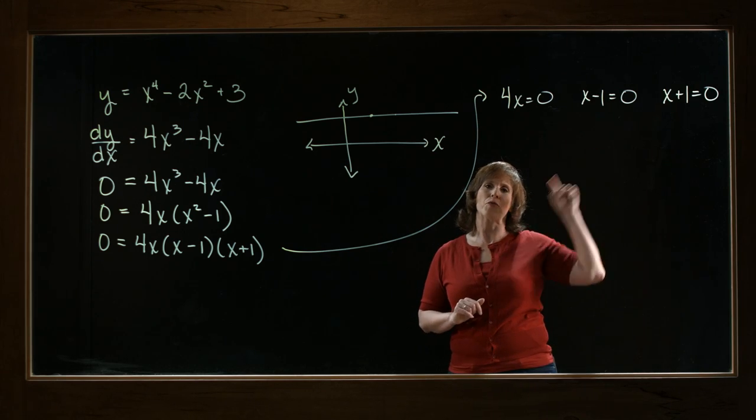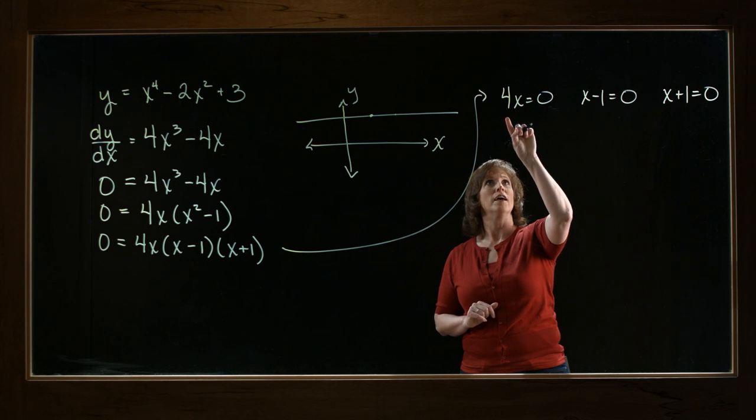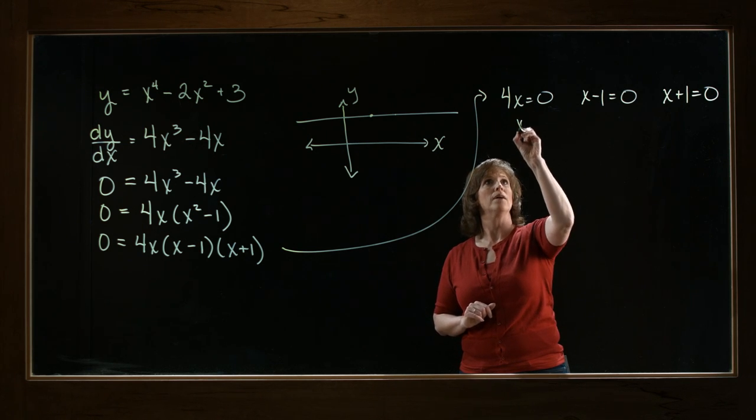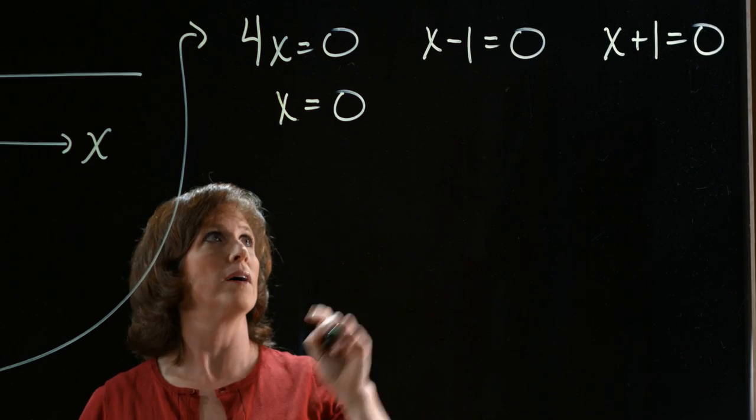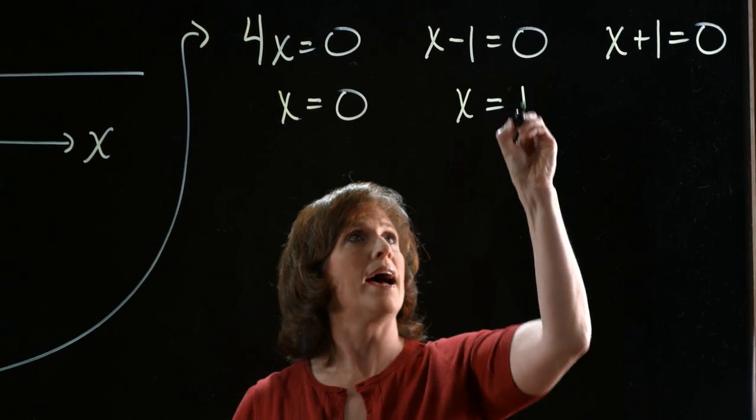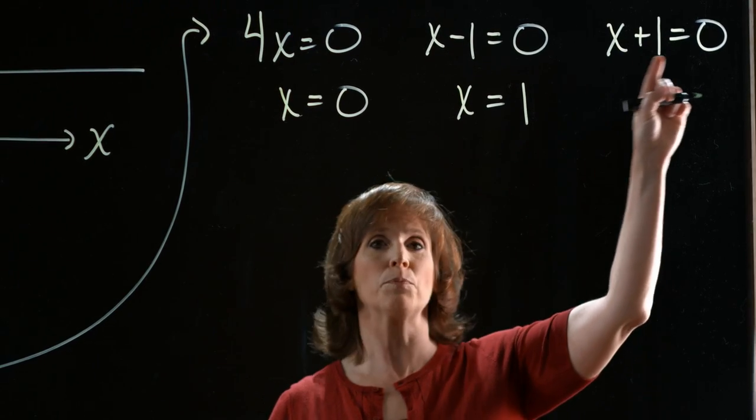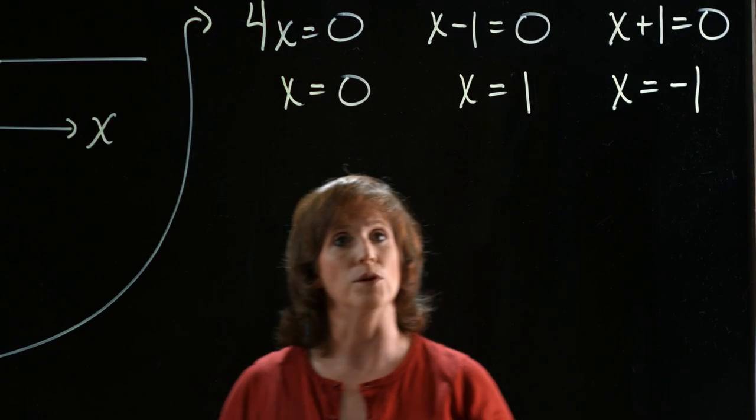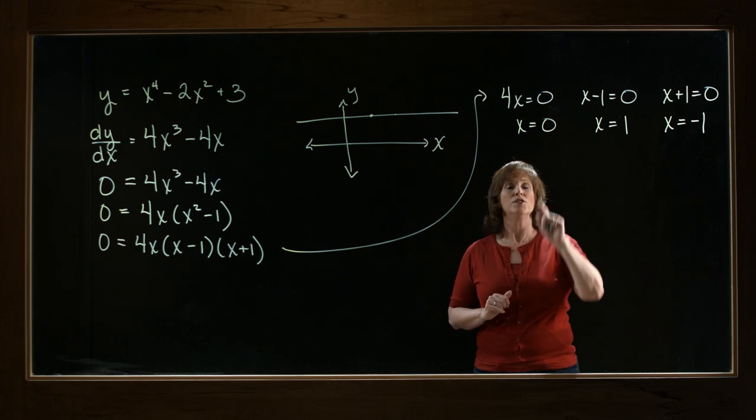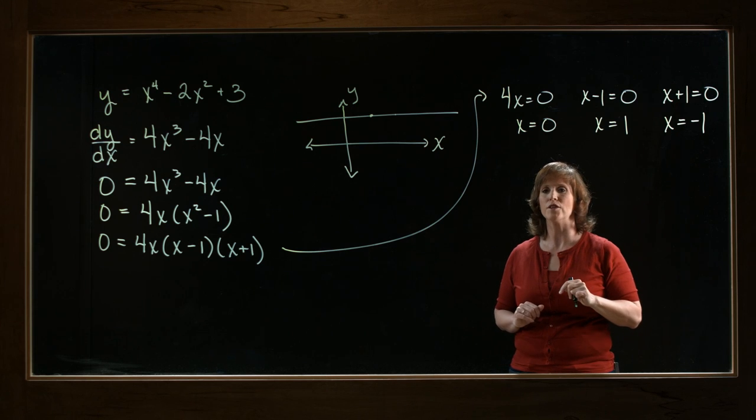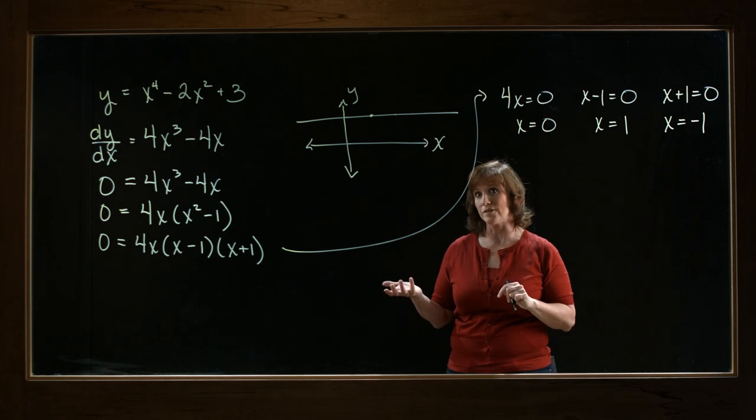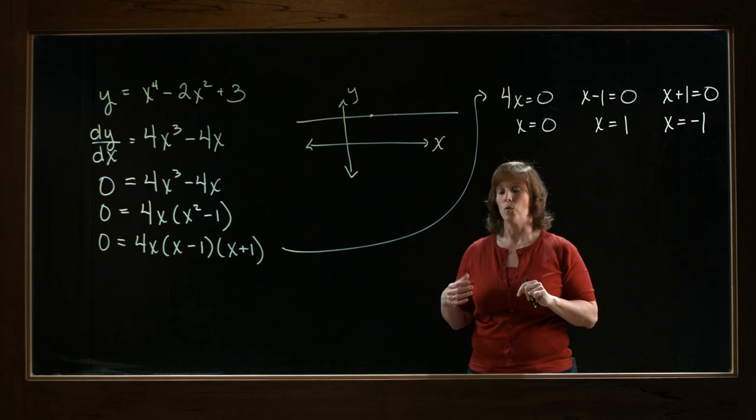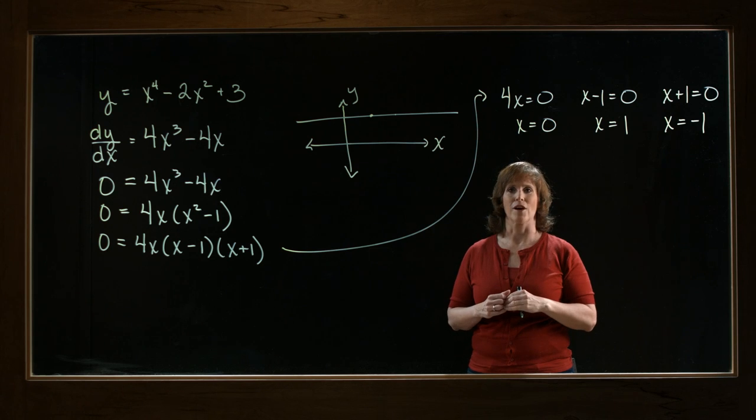So I now have three smaller equations to solve. If 4x equals 0, x must be 0. If x minus 1 is 0, x must equal 1. And if x plus 1 is 0, x must equal negative 1. So these are all the locations where the derivative will be 0, or in other words, the slope of the tangent line will be 0, or we'll have a horizontal tangent.